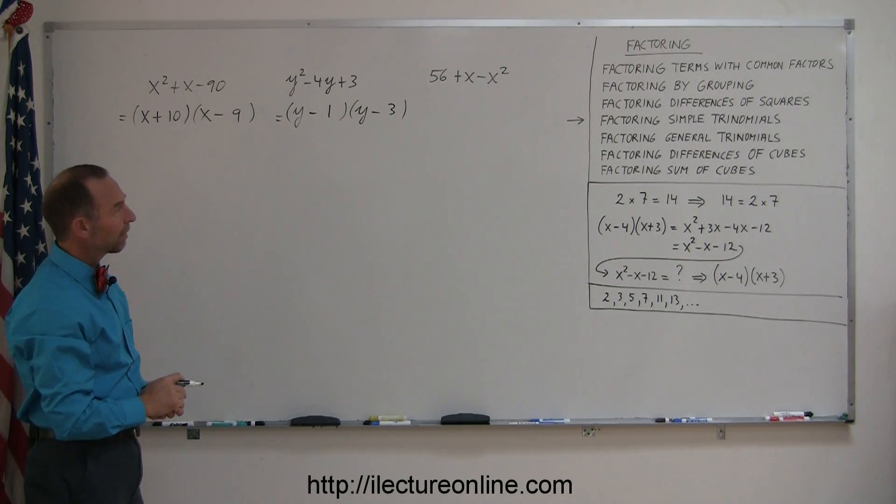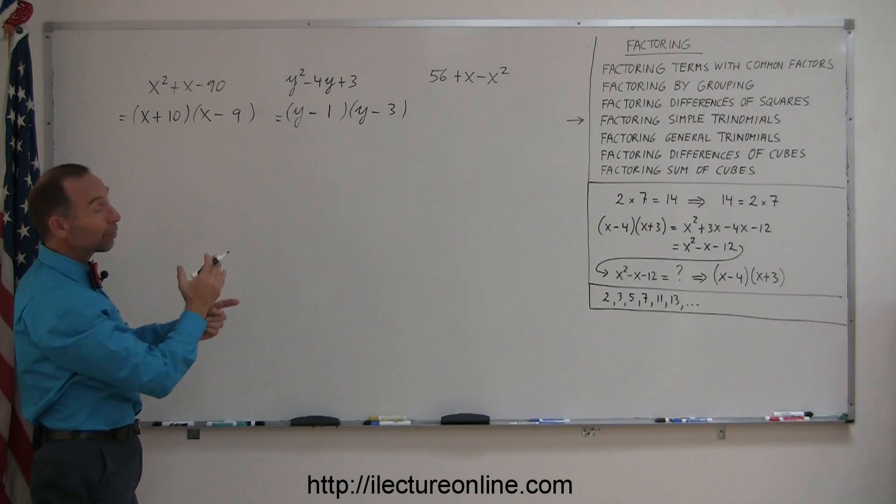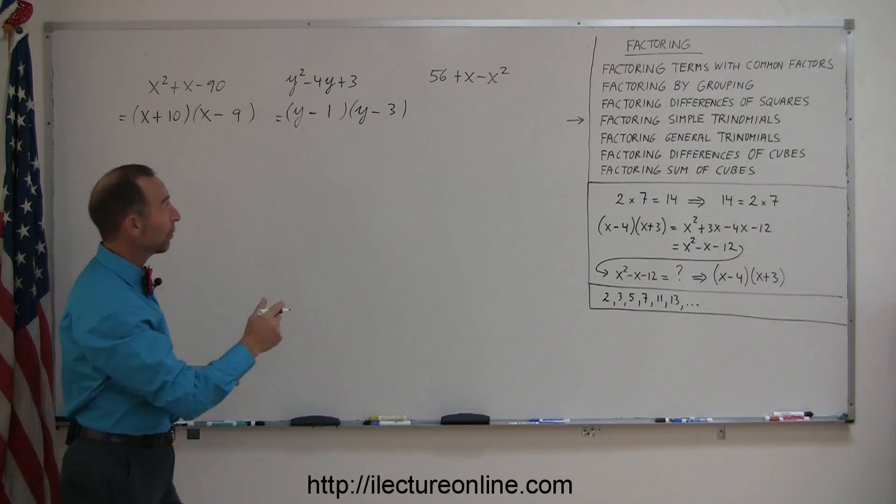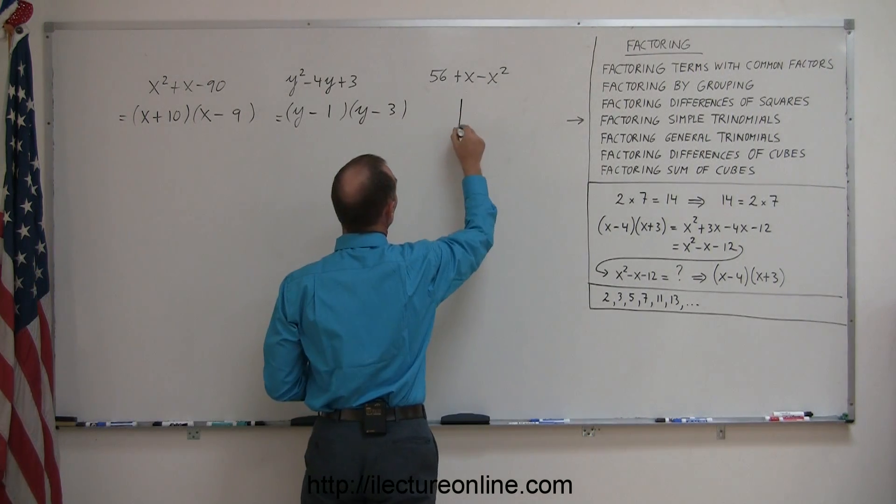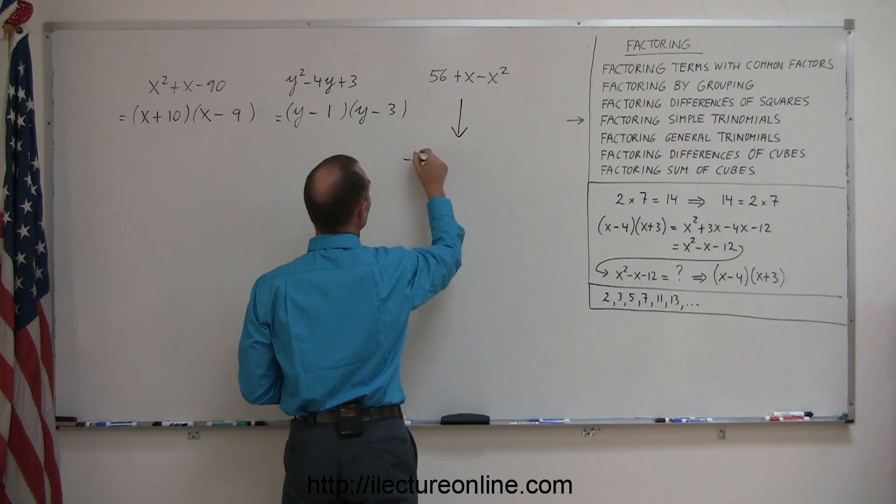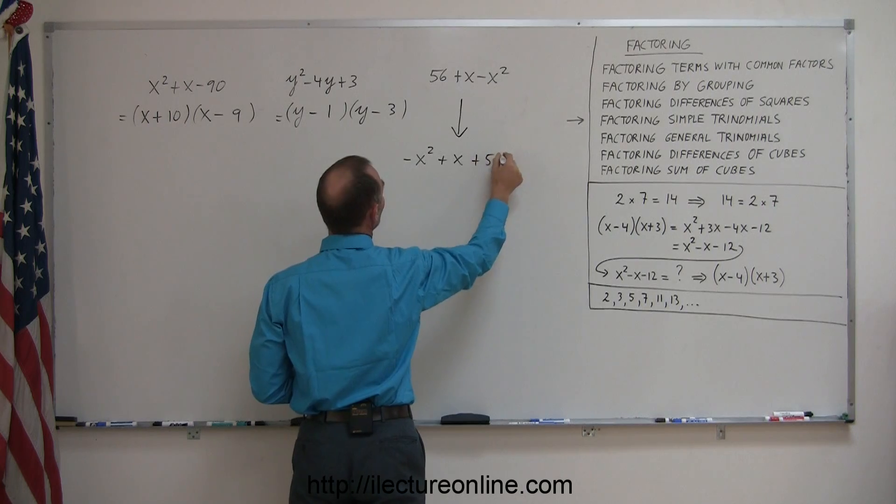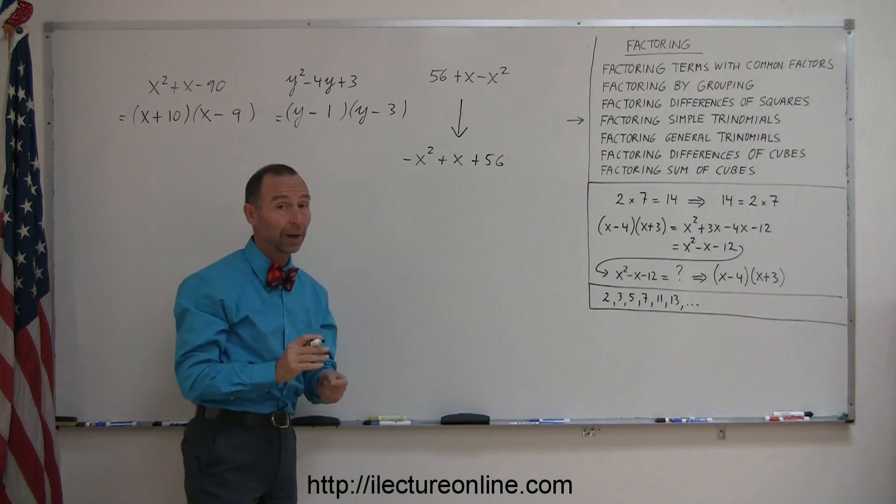Looking at the next one, we have a bit of a problem. First of all, they're not in the right order, so you may want to rewrite that problem, putting all the terms in the right order. So put the x squared first, minus x squared, plus x, plus 56. Now at least they're in the right order.